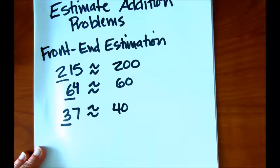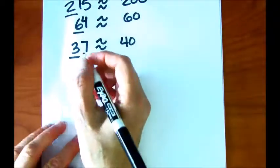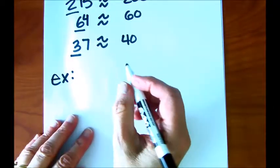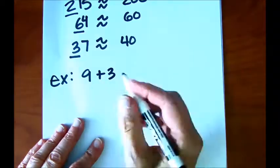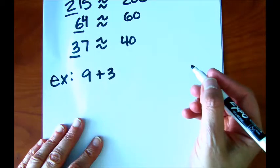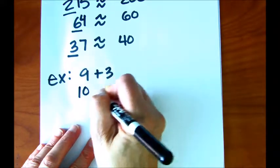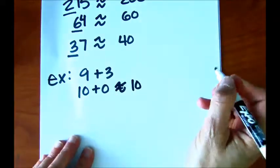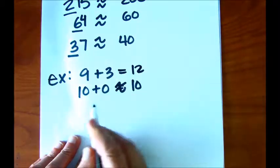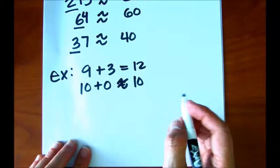So in these examples, we're just doing some rounding. But let's take it to the next step — let's use this for adding. In our first example, we'll just work with some single-digit numbers. Let's say we have 9 plus 3. As an example of estimating, we could round this 9 to 10 and the 3 to 0, so approximately 10 will be our result. We know that 9 plus 3 is 12, but for a quick estimation, 10 plus 0 is approximately 10 — and we're kind of in the ballpark.